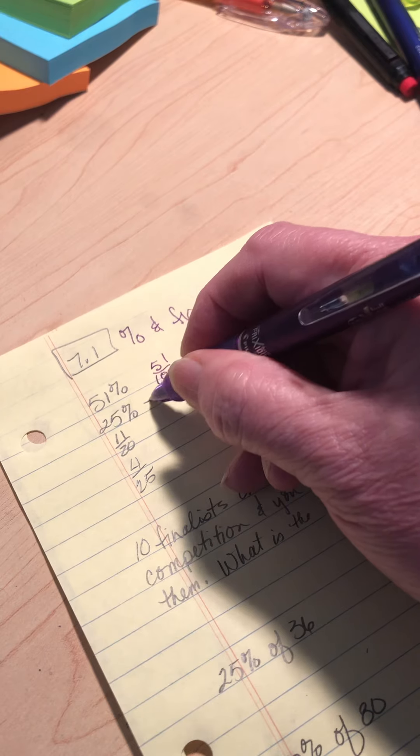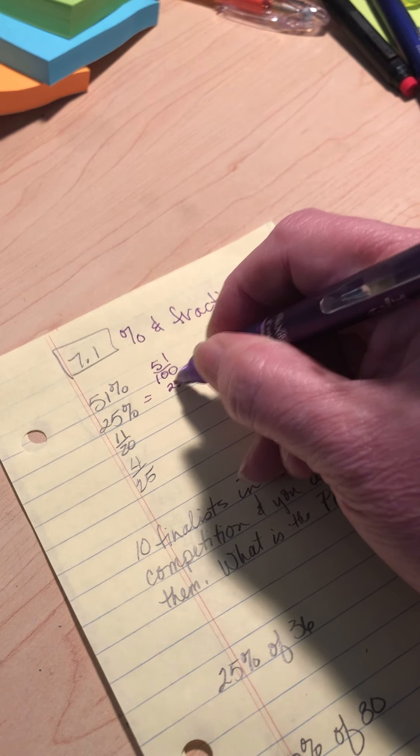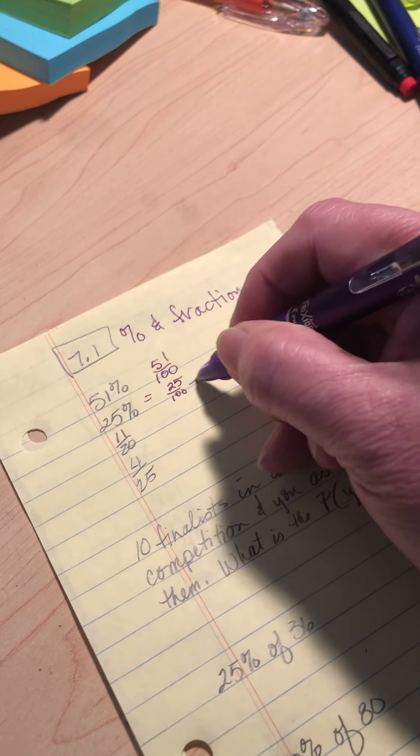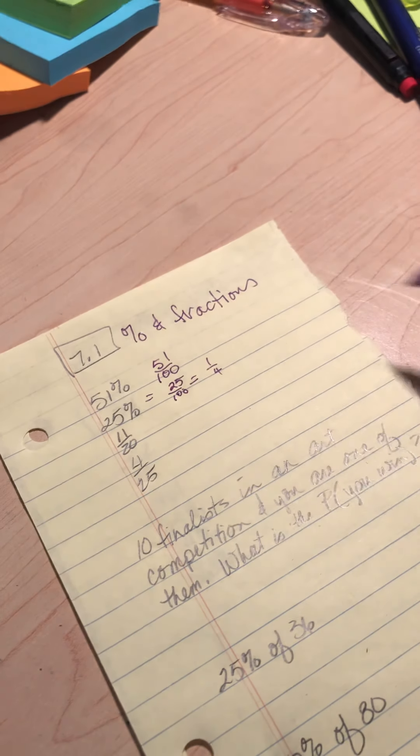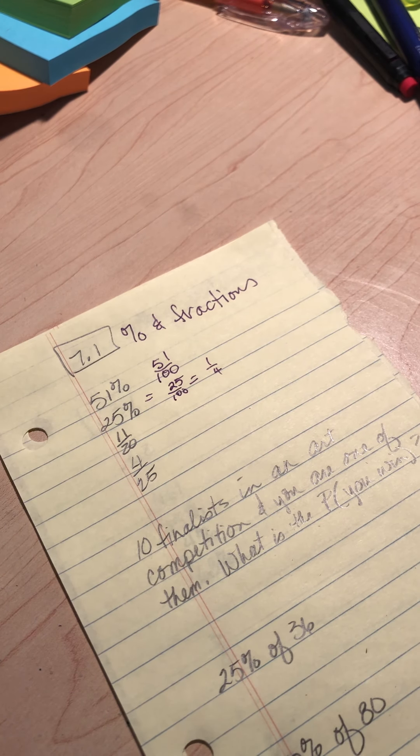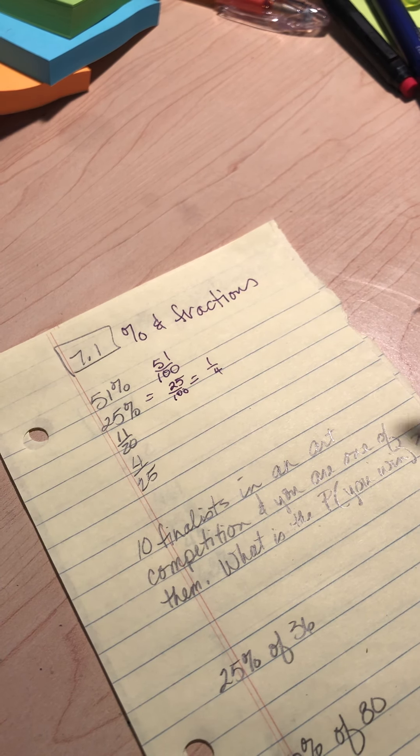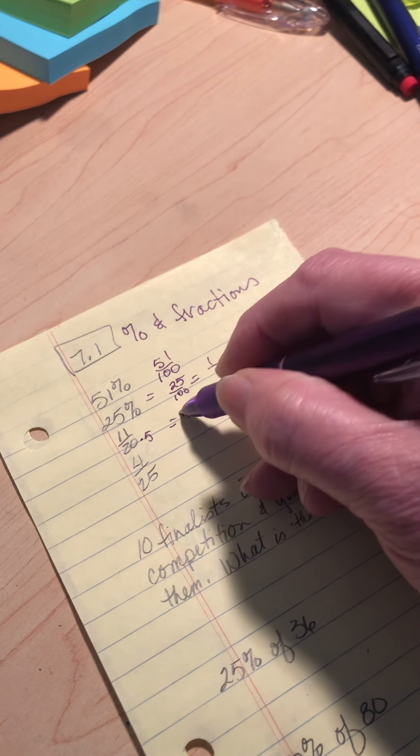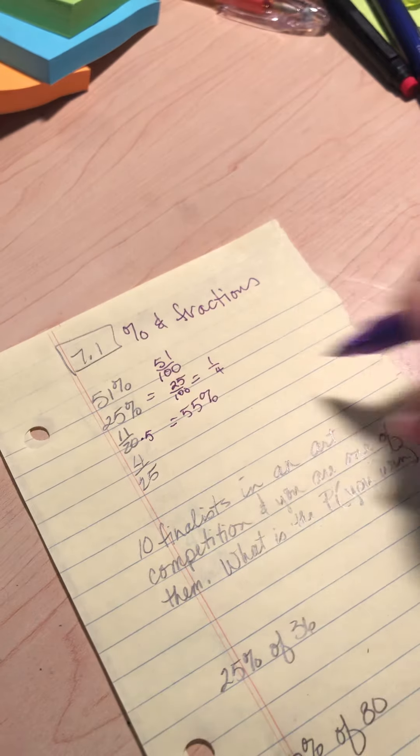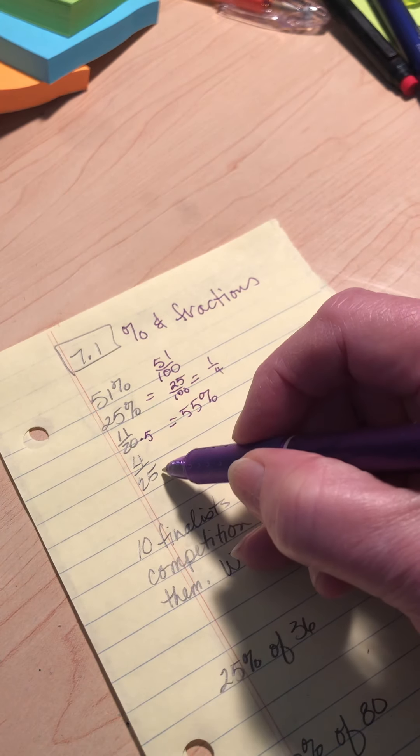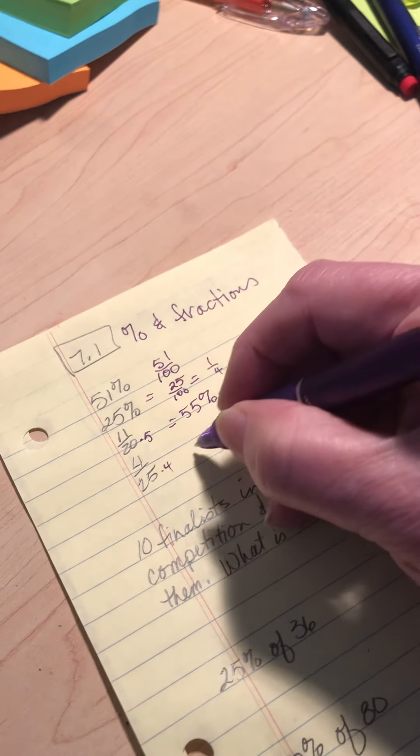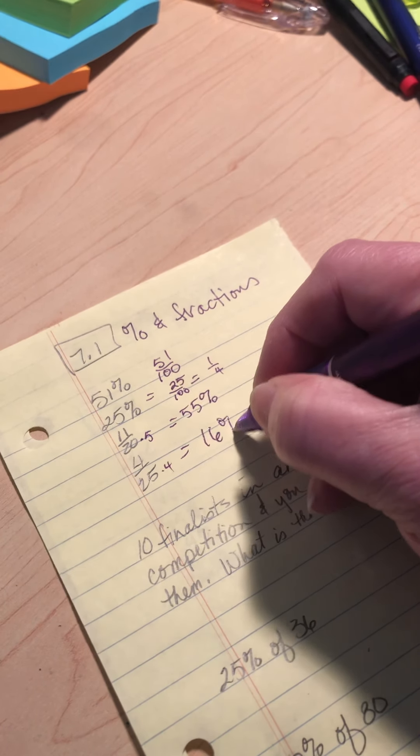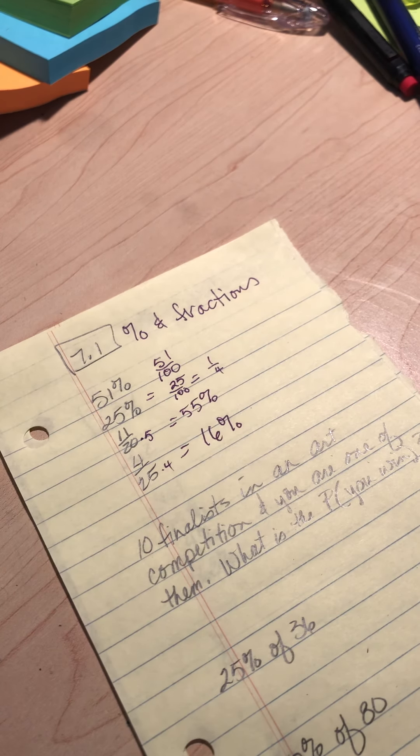25%, you should know that one, but 25 over 100 simplifies to one-fourth, but you should know that one by heart. 11/20, hopefully you know that 20 times 5 is 100, so that's going to be 55%. 4/25, well, 25 times 4 is 100, so this is 16%.